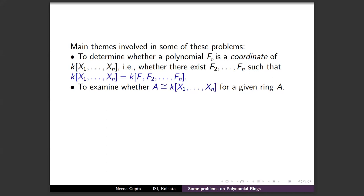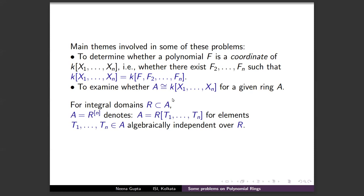Another fundamental problem: given an arbitrary ring A — perhaps the zero set of some polynomials — whether that ring A is isomorphic to a polynomial ring in n variables. These two basic problems are related to most of the problems discussed today. The notation A = R[⁽ⁿ⁾] means A is a polynomial ring in n variables over R.